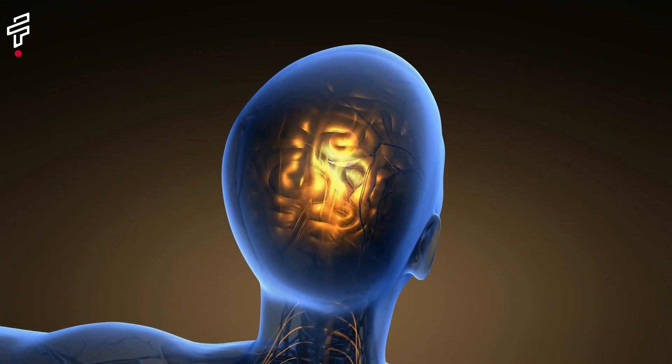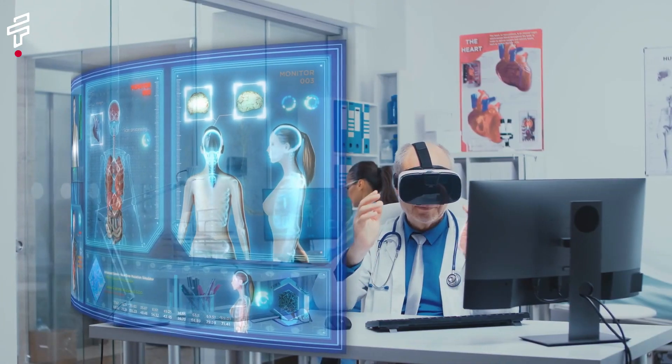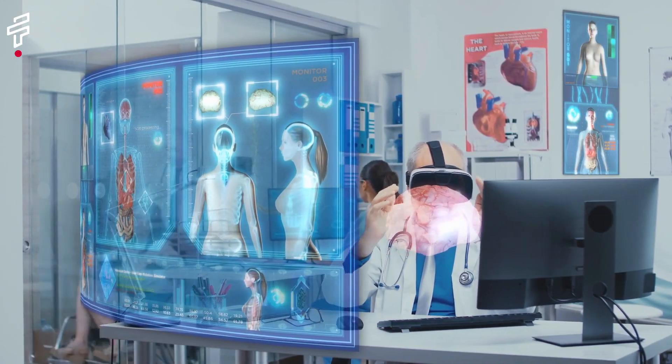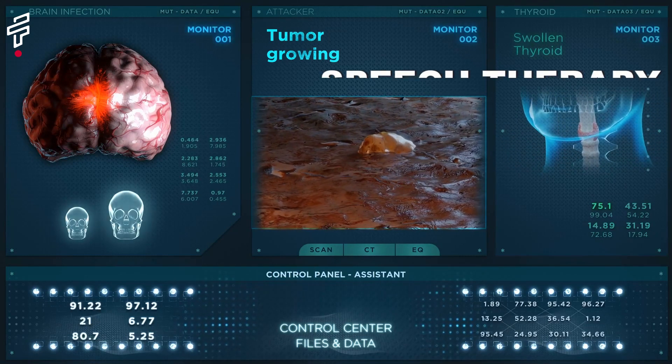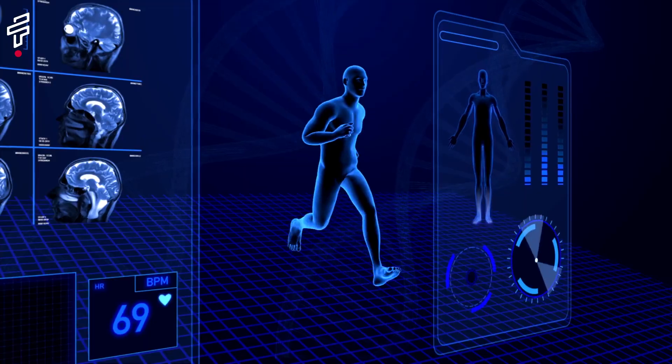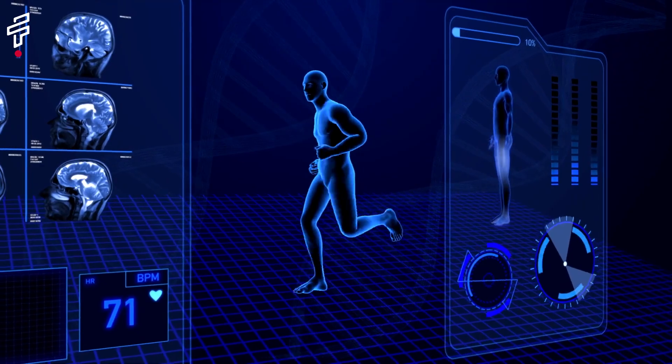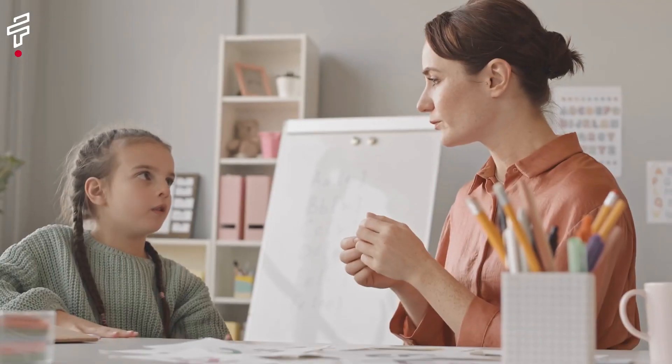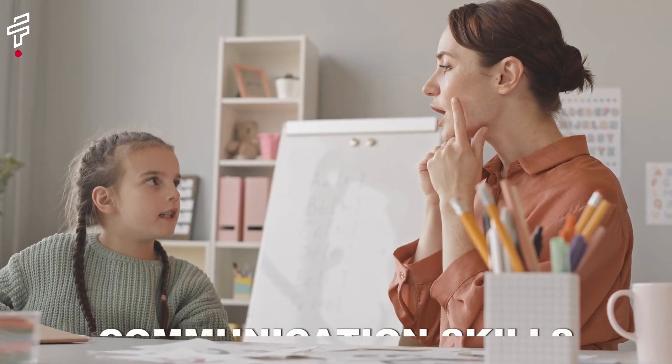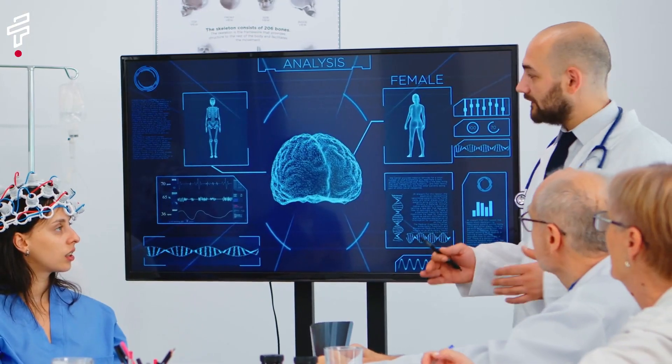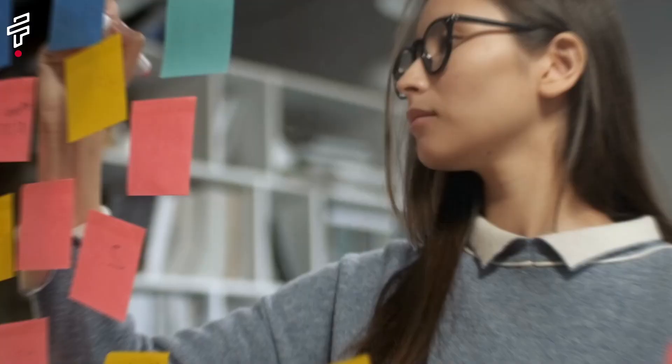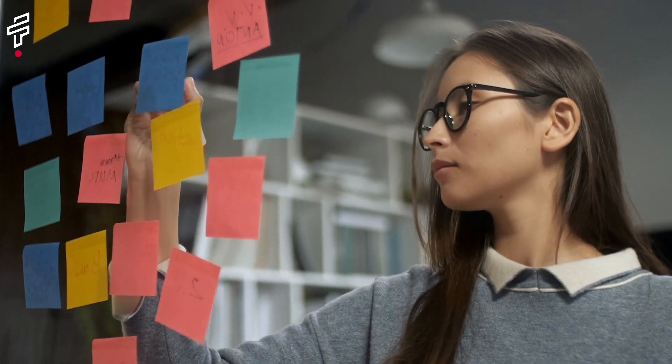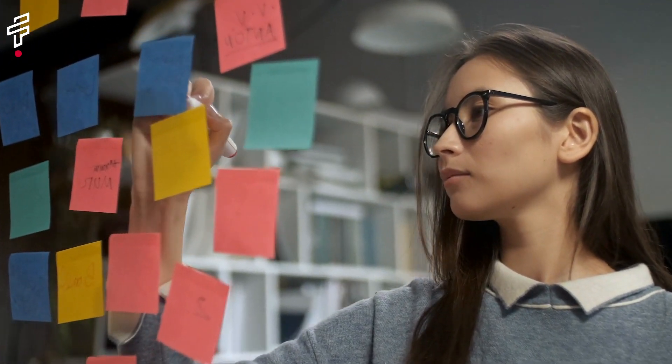Fact number eight, while there is no cure for brain damage, there are treatments that can help improve symptoms and quality of life. These treatments include physical therapy, speech therapy and medication. Physical therapy can help to improve movement and coordination, while speech therapy can help to improve communication skills. Medication can be used to treat pain, seizures and other symptoms. With the right treatment, people with brain damage can live full and productive lives.